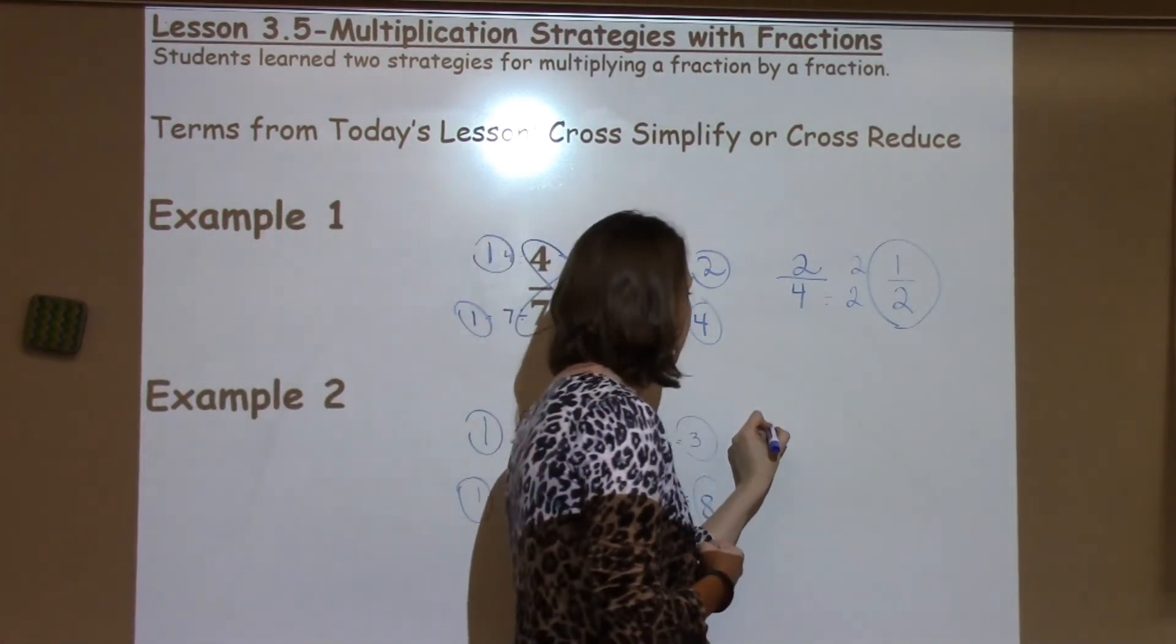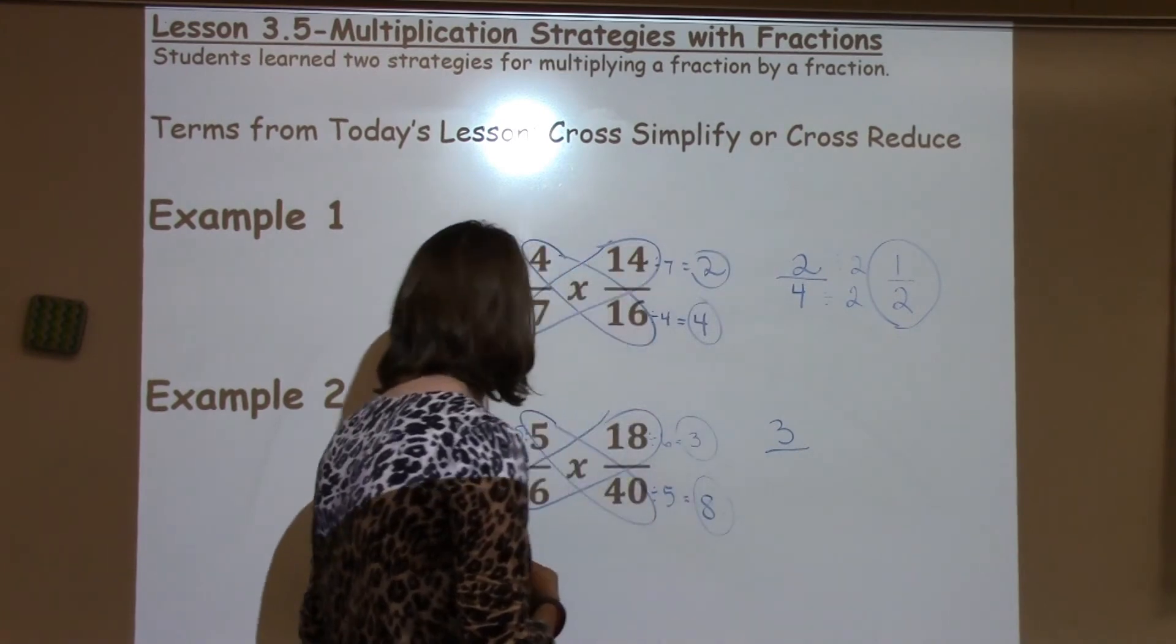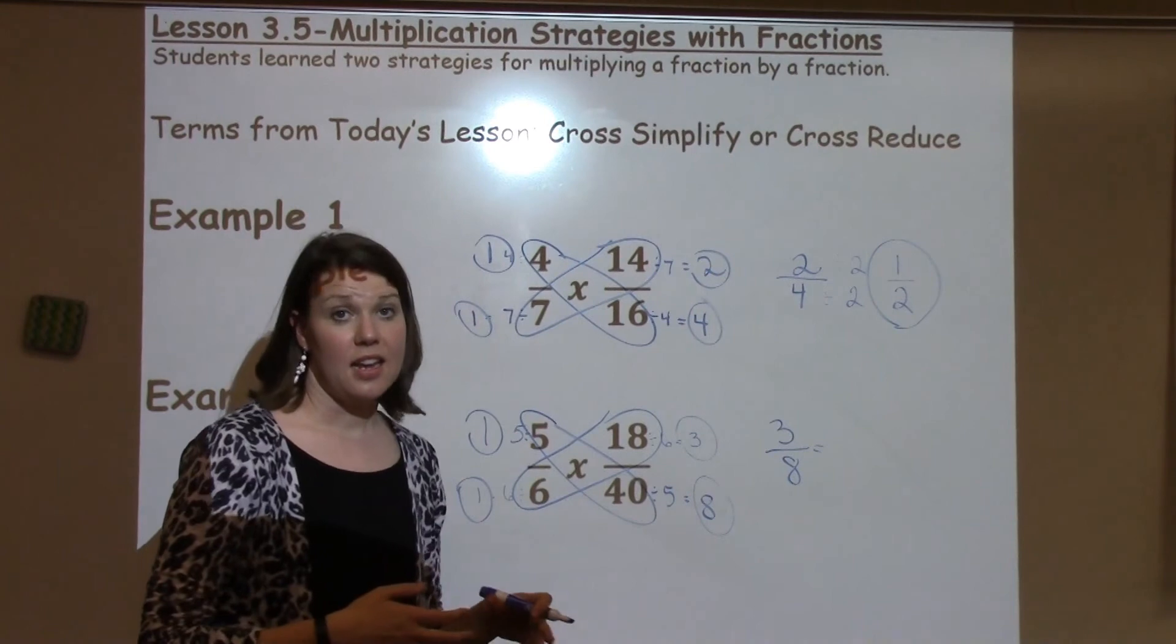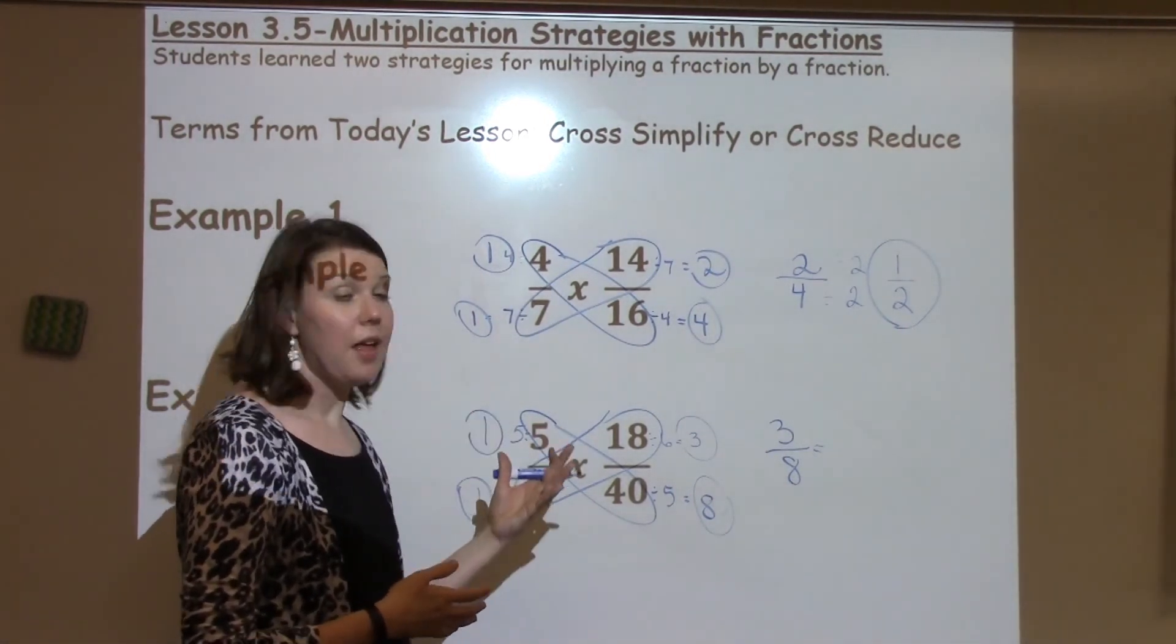So 1 times 3 is 3. 1 times 8 is 8, which gives me 3 eighths. Looking at this, I cannot reduce it any further. So I know this is as simple as it can go.